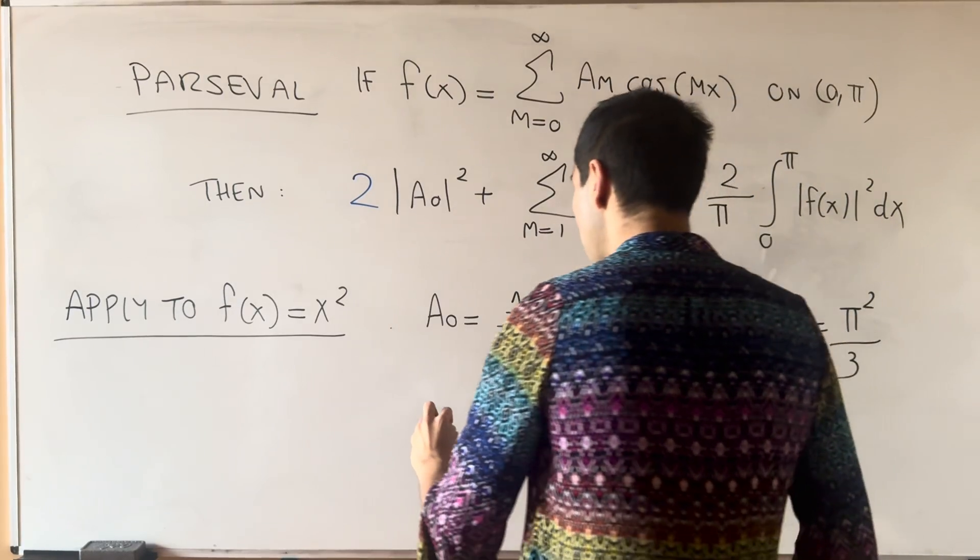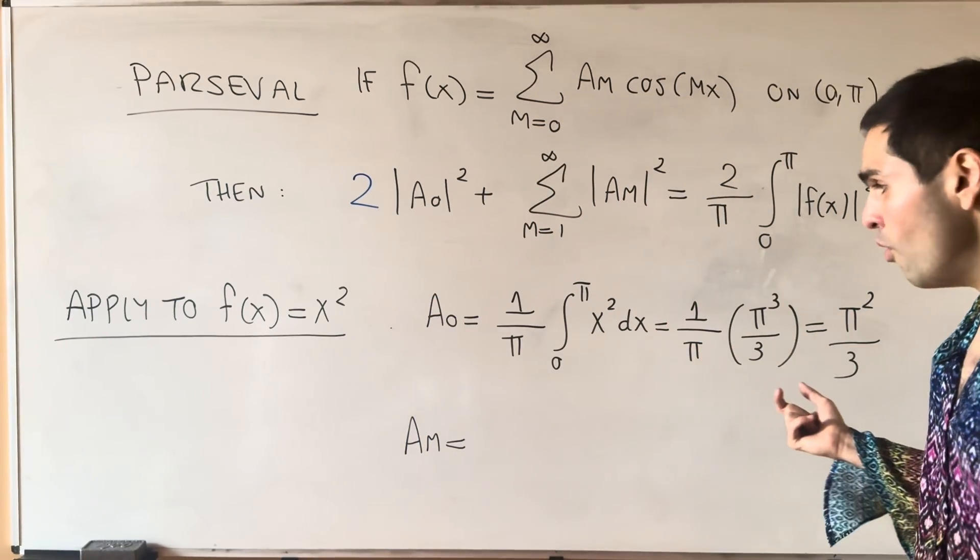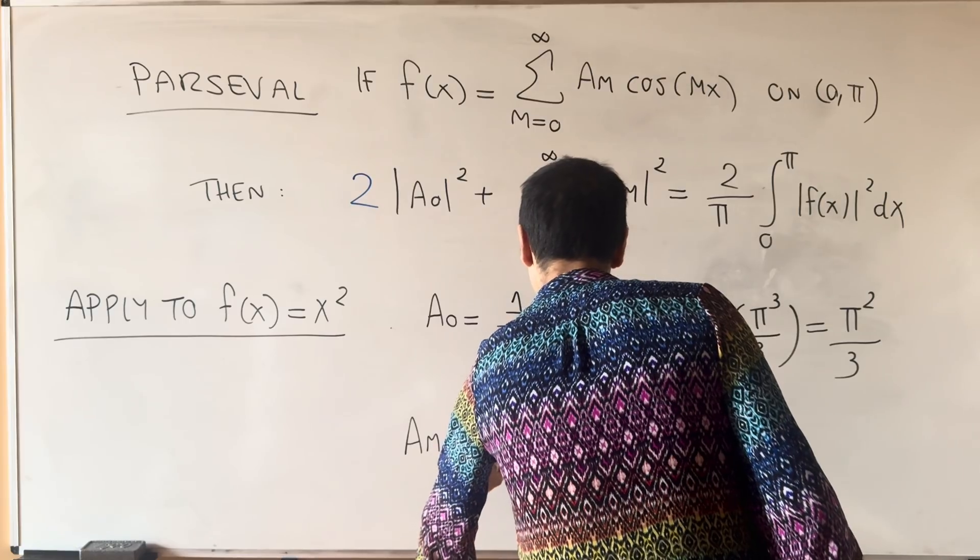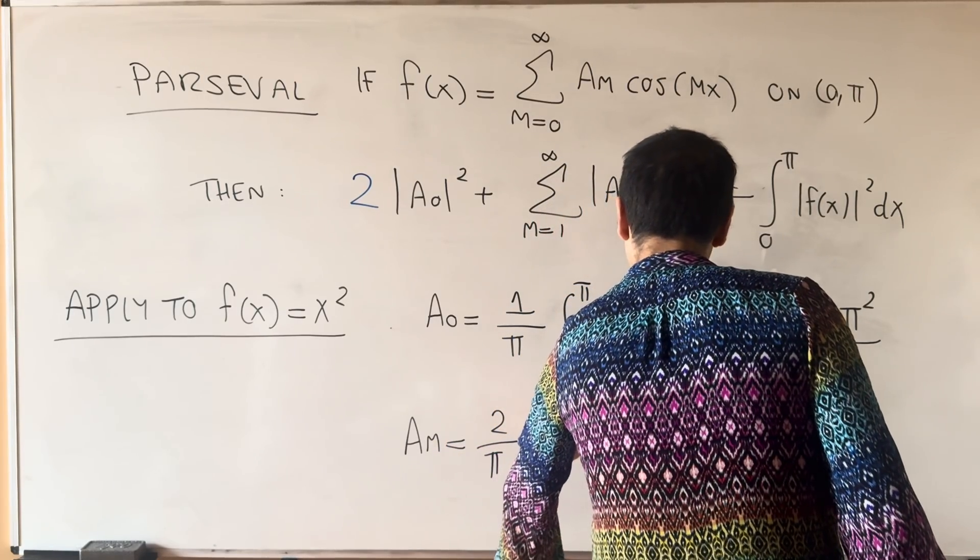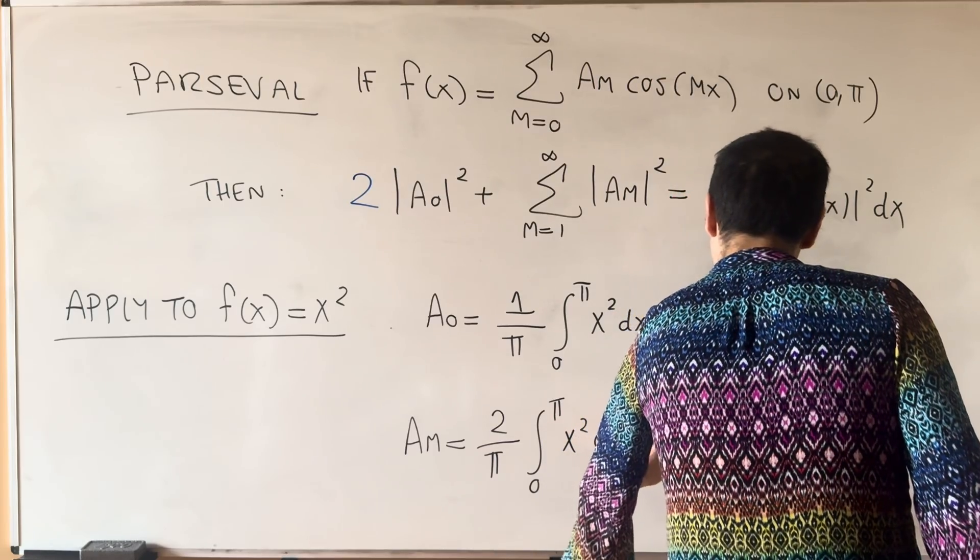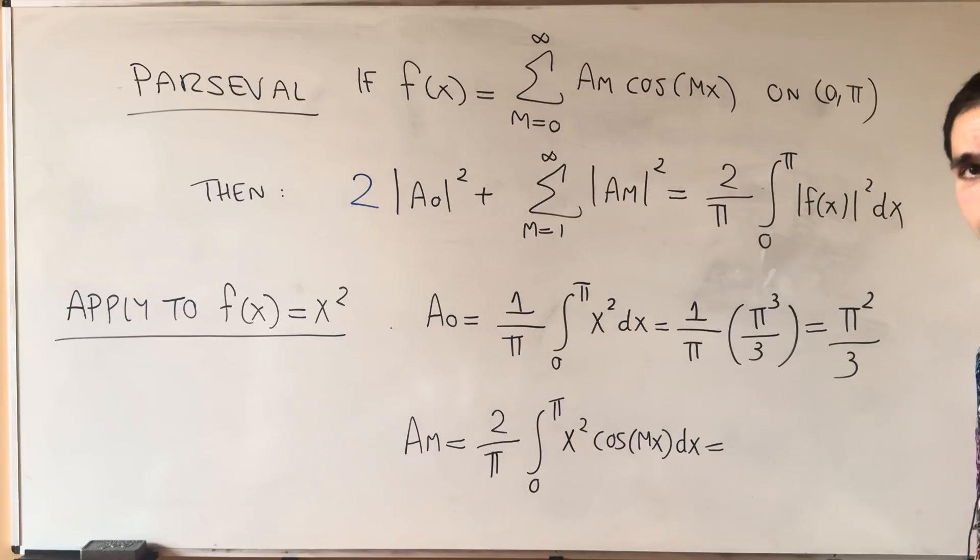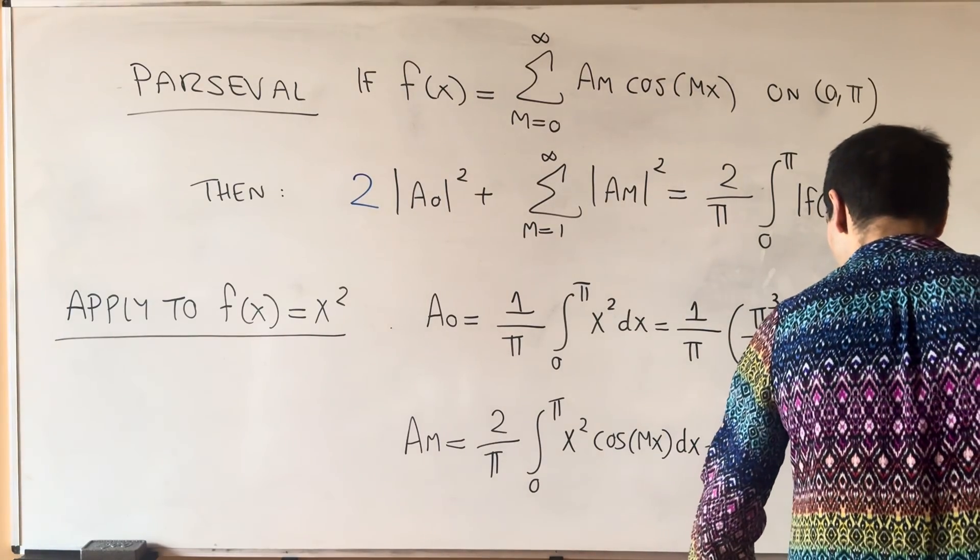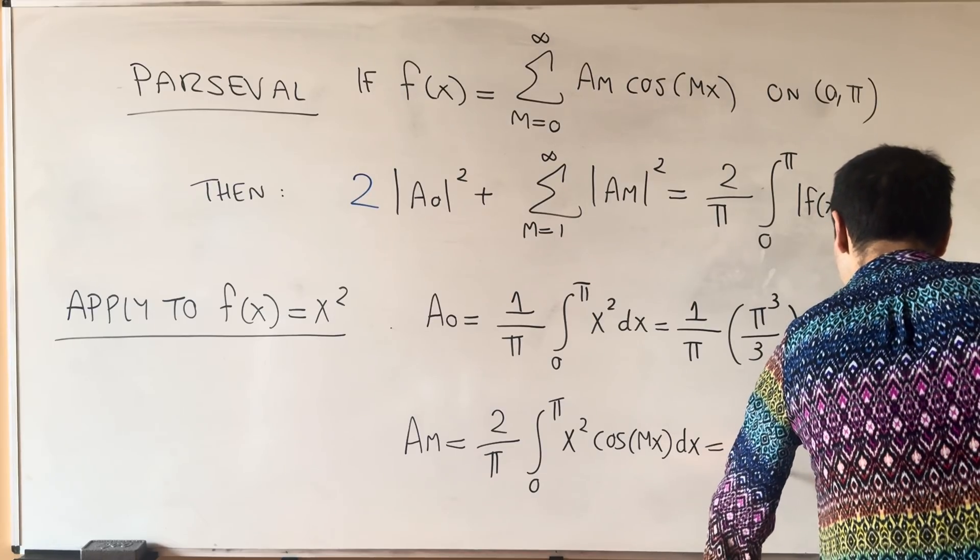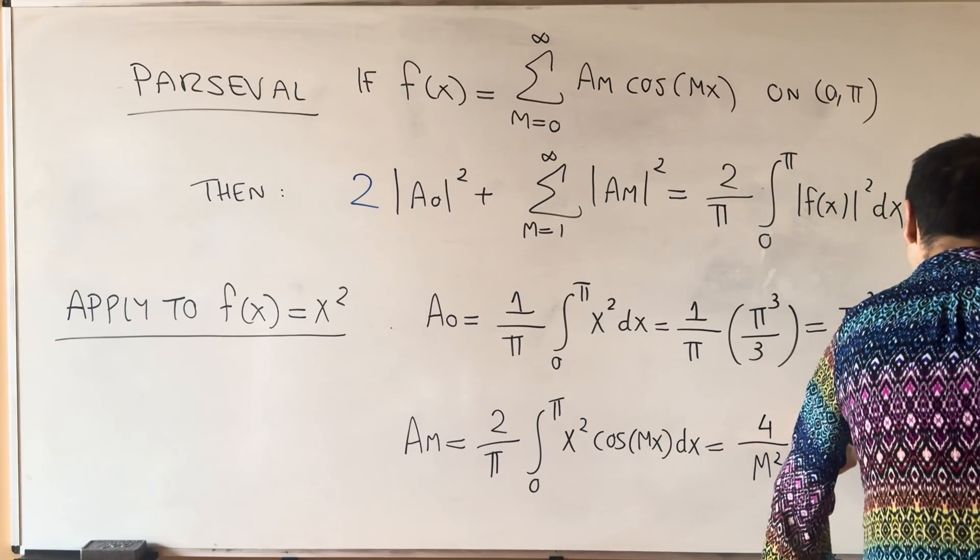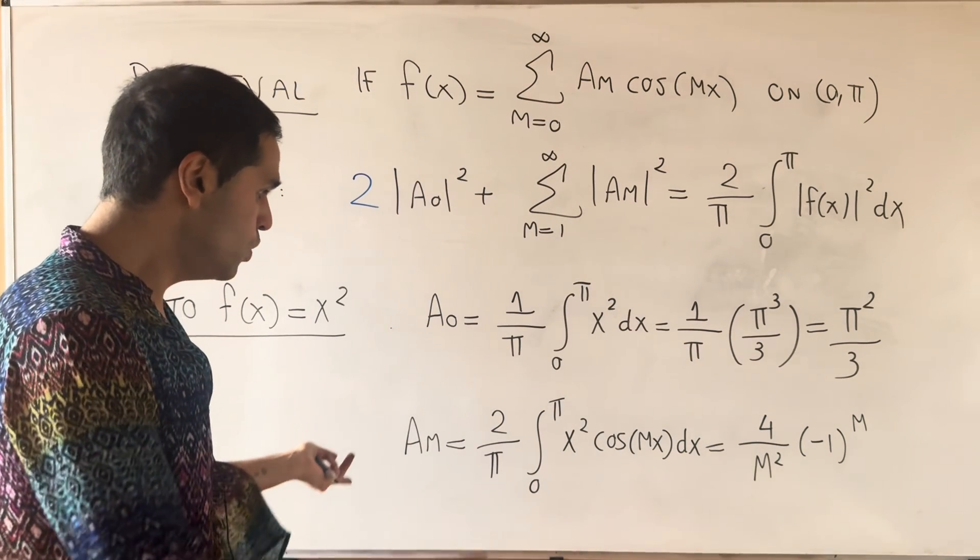And a_m, I'm not going to do this, but similarly to what we did before, a_m is 2 over pi integral from 0 to pi, x squared, cosine mx dx. So for instance, you can use tabular integration for that. And I believe what we get, I might be mistaken, I think we get 4 over m squared, and then minus 1 to the n. And in using that, let's just plug into both sides of Parseval's identity, and see what we get.